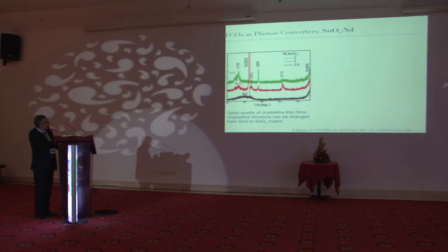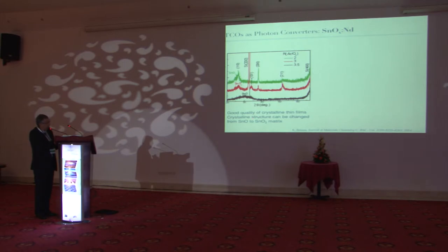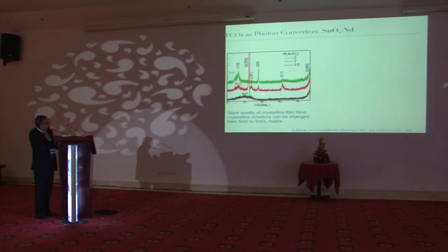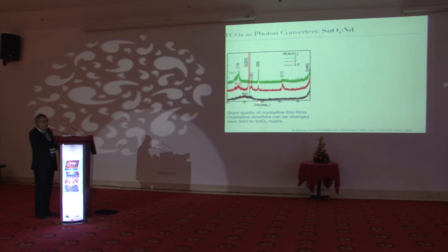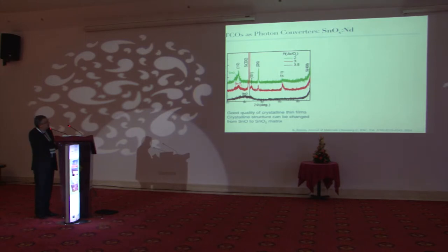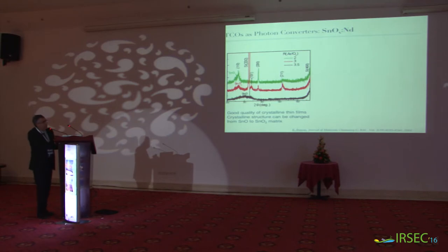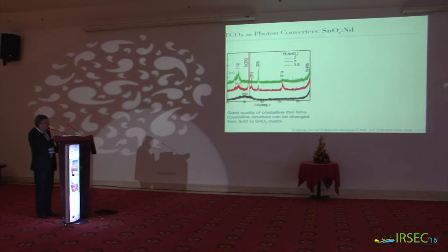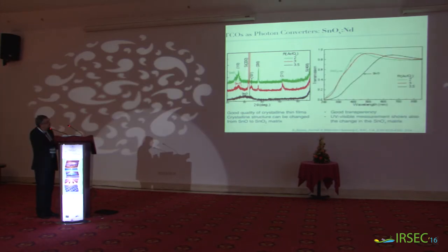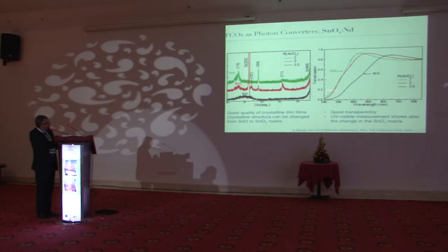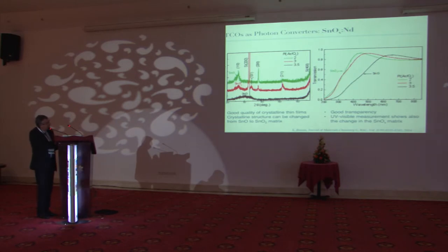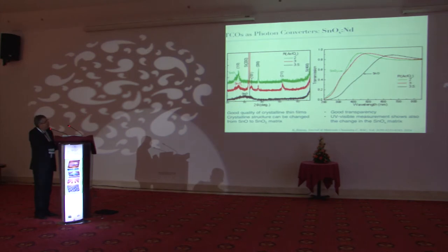We then moved from zinc oxide to tin oxide doped with neodymium for comparison. We obtained good quality crystalline thin films. Interestingly, by playing with the argon-to-oxygen flow ratio from about 2 to 3.5, we can produce either SnO or SnO2 — which is very important because SnO is a p-type material while SnO2 is n-type, making this system very useful for different device applications.